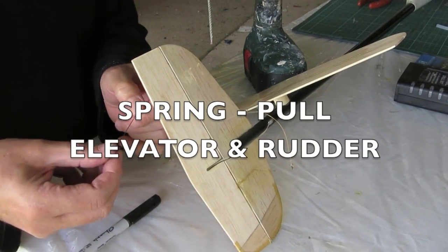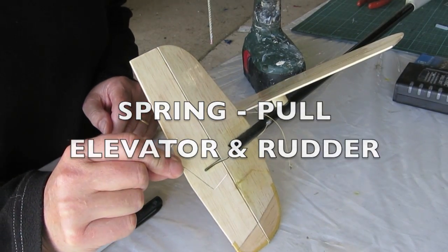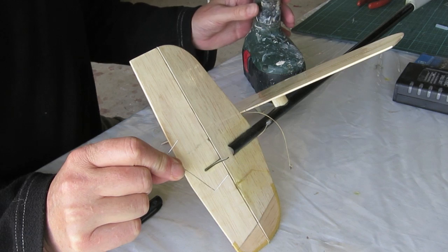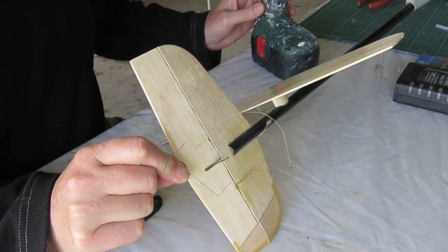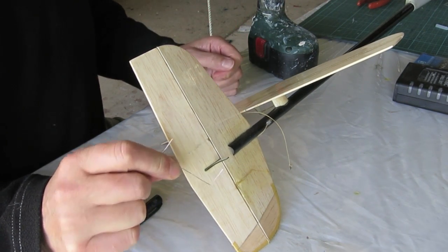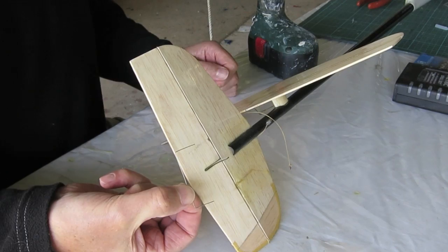This is my spring pool setup for the elevator and rudder on a Versus Discus launch glider using the 0.4mm stainless steel wire that was provided with the kit for the push rods.